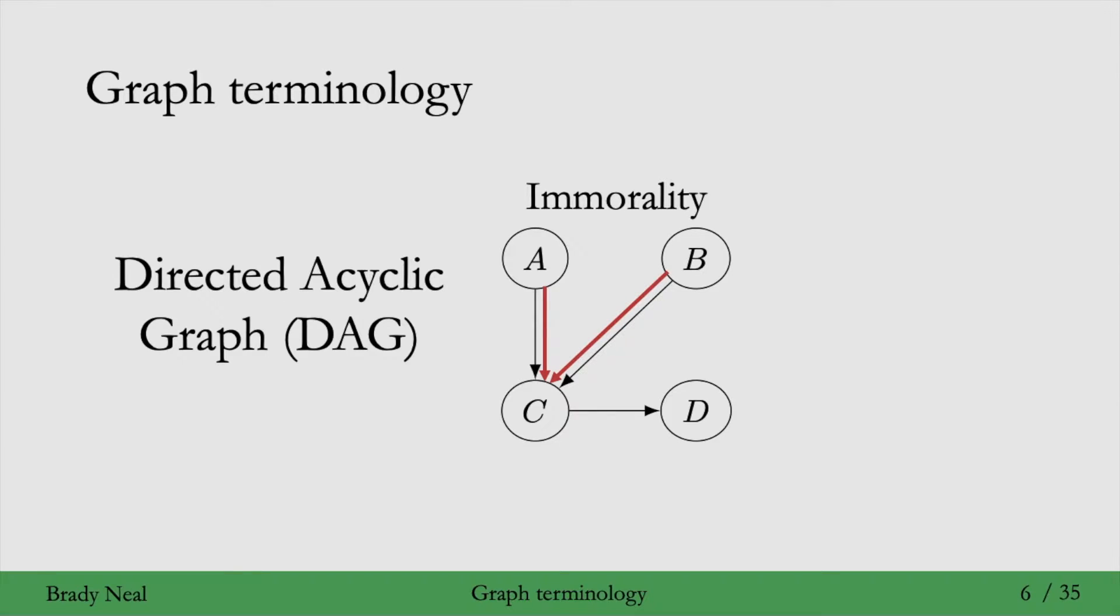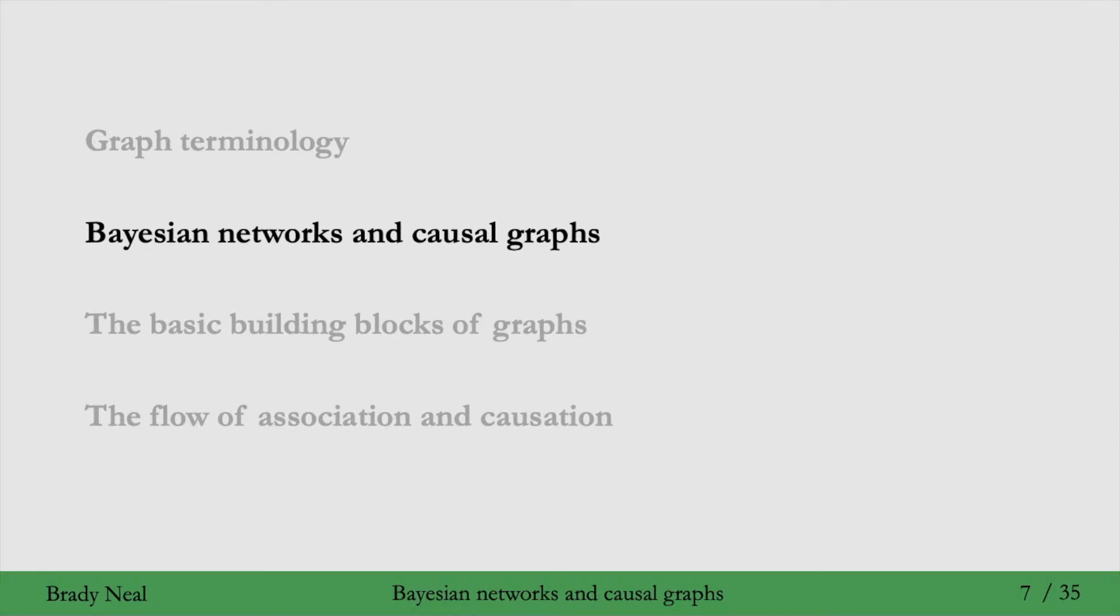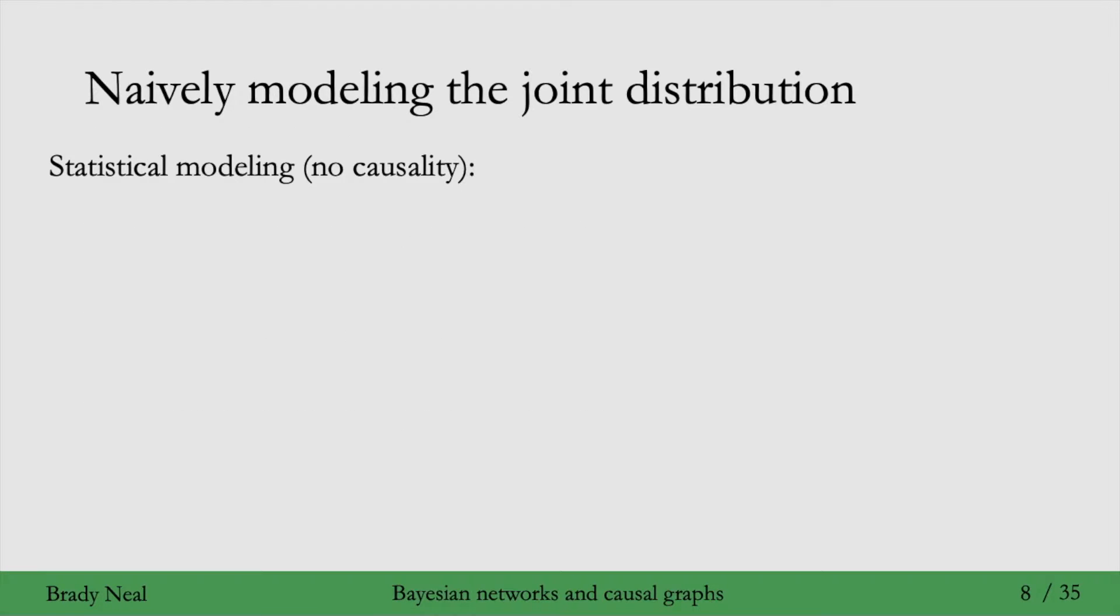All right, so with that lesson in morality, I think we can conclude the graphical terminology portion of this lecture and move on to the Bayesian networks and causal graphs portion. Let's start with no causality at all, just statistical modeling. We'll see that this is a theme throughout the course, statistical models versus causal models. But for now, we're just going to start with statistical modeling.